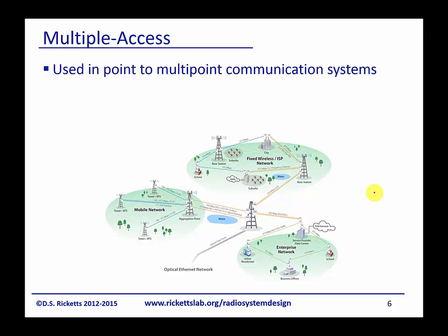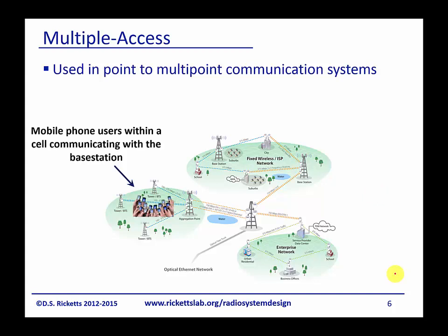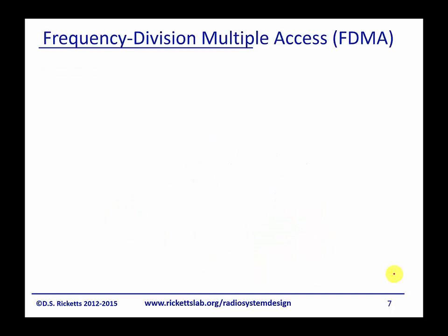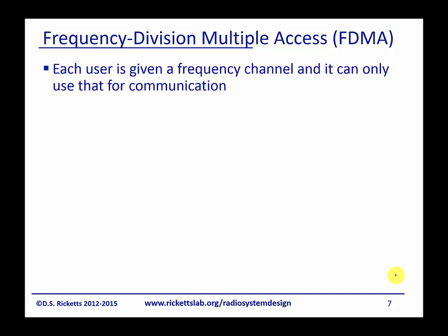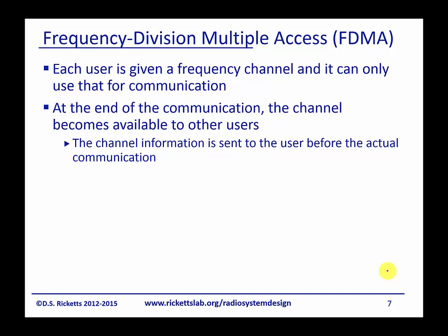Multiple access is about multiple people communicating on the same network, and it's used in point-to-multipoint communication systems — a great example being the mobile network. In frequency division multiple access (FDMA), each user is given a frequency and can only transmit on that frequency. At the end of the communication, the channel becomes available to other users, and the channel information is sent to the user before the actual communication. So we would tell the cell phone to use a specific frequency, it would be dedicated to them, and when done it would be released for another cell phone.